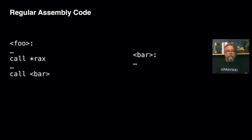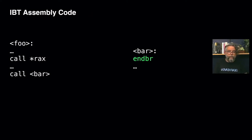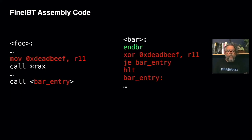This is a regular assembly code as normally emitted by an ordinary compiler — you can see an indirect call and a direct call there. This is the assembly code generated with the basic IBT instrumentation — you can see an end-branch instruction there. And this is the FineIBT instrumentation.